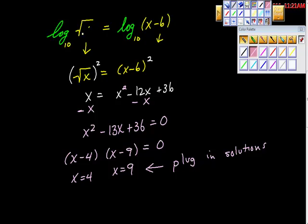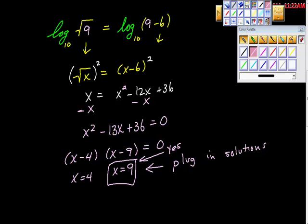It says x is 9, so we'll go up here and say 9, we'll put 9 in here. Square root of 9 is 3, so we'd have the common log of 3 is equal to 9 minus 6 is 3. So we'd have the common log of 3 is equal to the common log of 3. That makes perfect sense. So I'm going to take this answer and say yes.